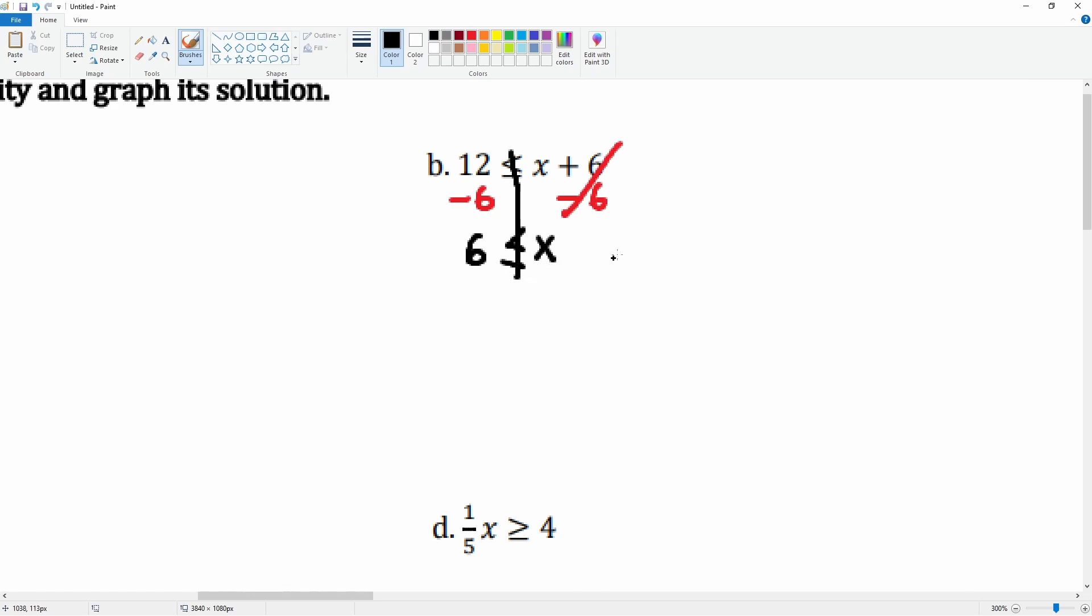But it's weird for the x to be on the right, so we can write it in a different version. We can say x is greater than or equal to 6. This way is better to take a look at. Okay, here's the number 6 for reference and here's the number 0. Here it's going to be closed. This is read: x is greater than or equal to 6. So here is the closed circle and it goes all the way to the right.